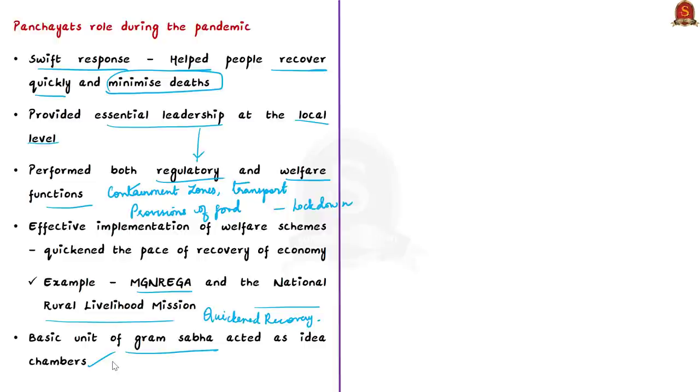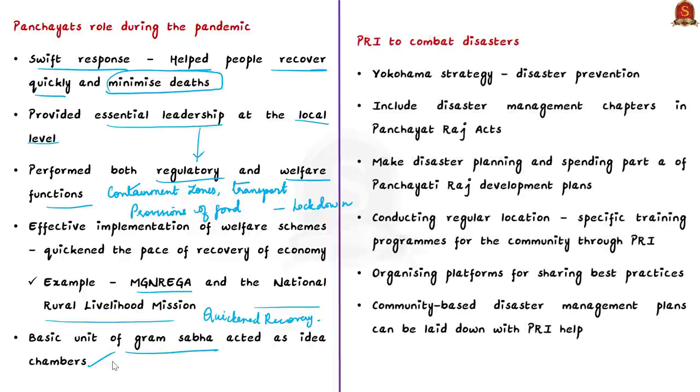Moreover, effective implementation of welfare schemes like MGNREGA and the National Rural Livelihood Mission was ensured by these Panchayati Raj institutions, which quickened the pace of recovery of our economy. The basic unit of Gram Sabha acted as idea chambers wherein deliberations and consensus could be reached. The author believes these institutions have the potential to serve as institutions to combat disasters as well.